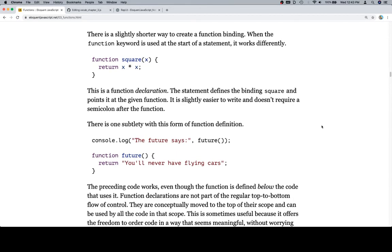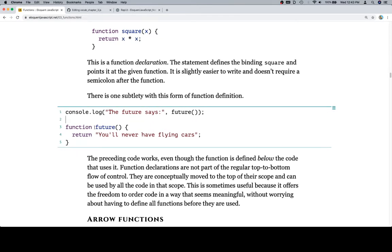There is one subtlety with this form of function definition, and as you'll see, it looks like they're calling the future function here, but they've defined it on line 3. So if we run this, let's read the following paragraph. The preceding code works even though the function is defined below the code that uses it.